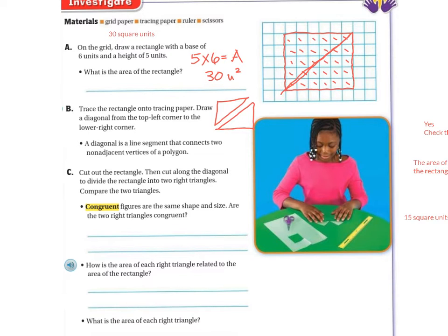Congruent means that they are the same. So congruent figures are the same shape and size. Are the two right triangles congruent? And you should have found that, yes, they are congruent.